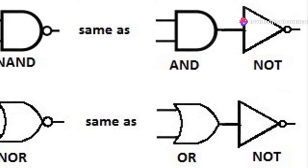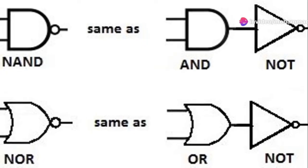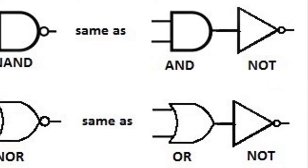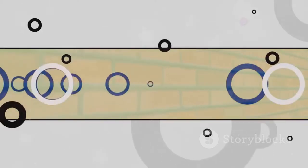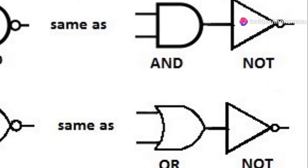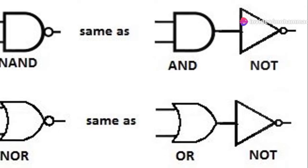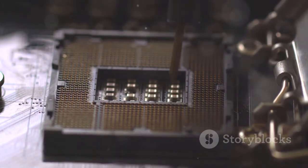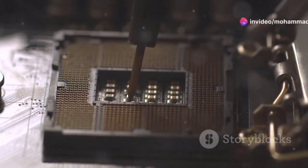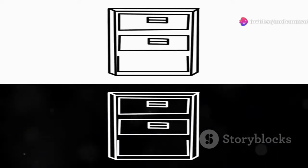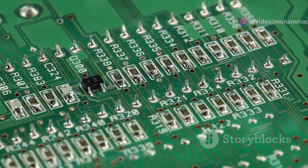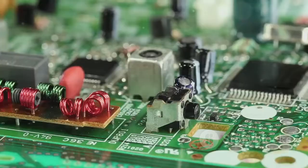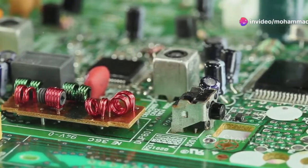Universal Logic Gates: NOR and NAND. These are special because they can be combined to create any other logic gate. That's why they're called Universal Gates. The NOR gate is like an OR gate followed by a NOT gate. It outputs a 1 only if both inputs are 0. The NAND gate is similar, but it's like an AND gate followed by a NOT gate. It outputs a 1 unless both inputs are 1. Because NOR and NAND gates are so versatile, they are often used as the building blocks for more complex digital circuits. This simplifies the design process and can reduce the number of components needed.